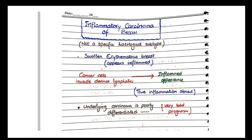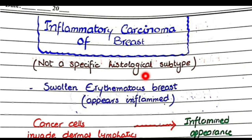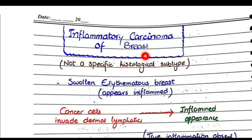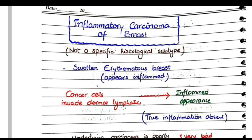Inflammatory carcinoma of the breast is an important topic often asked in exams. It is not a specific histological subtype — rather it is a clinical representation. There is a swollen erythematous breast that appears inflamed. In some aggressive cancers, the cancer cells invade the dermal lymphatics, producing an inflamed appearance.